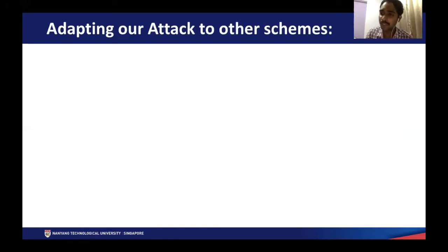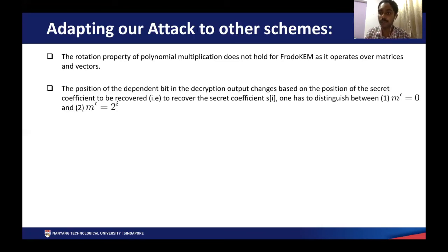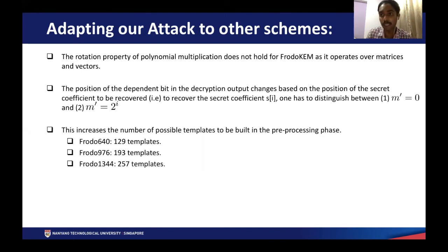Because all schemes differ in certain minor technical details, some schemes require us to adapt the attack differently. For Frodo, which involves computations over matrices and vectors, the rotation property of polynomial multiplication does not hold. Hence, the position of the dependent bit in the decryption output keeps changing based on which secret coefficient you want to recover. In order to recover the secret coefficient in the i-th position, one has to distinguish between M equal to all zeros and M equal to 2^i, meaning a one in the i-th position and zero at all other positions. This requires generating many more templates, and we list the number of templates required for different parameter sets of Frodo.